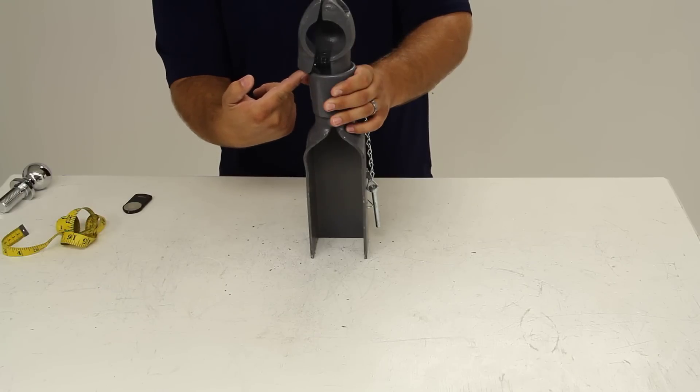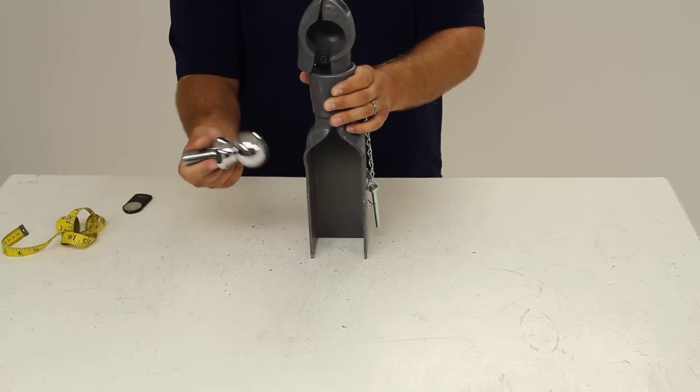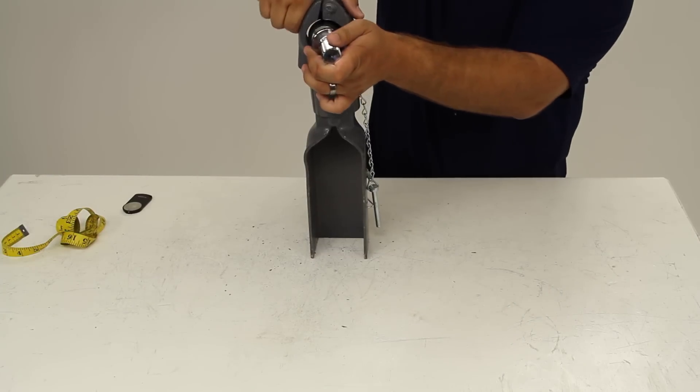There's a little hook here that'll hold it open while you get the ball fitted into your coupler. We've got a 2-inch trailer ball. We'll fit it into place, and then as we close the wedge,